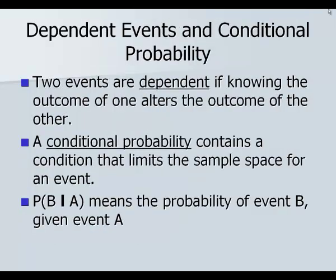Now we get into conditional probabilities. These occur when we have dependent events. Two events are dependent if knowing the outcome of one alters the outcome of another. A conditional probability contains the condition that limits the sample space for the event. The probability of B given A — that vertical line stands for 'given.' The event to the right of it, A in this case, is the one that's given.